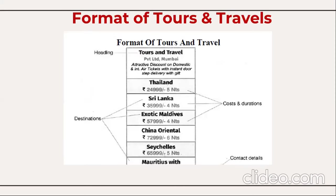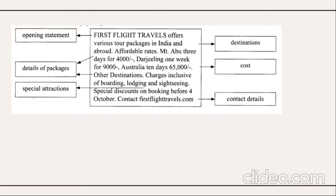Tours and travels advertisements are also budget-dependent — a high budget allows for a newspaper poster, while a low budget suits a simple classified format. Mention the heading, cost, duration, destinations, and contact details. For example: 'First Flight Travels offers various tour packages in India and abroad at affordable rates — Mount Abu 3 days for ₹4,000, Darjeeling 1 week for ₹9,000, Australia 10 days for ₹65,000. Charges include boarding, lodging, and sightseeing. Special discounts on booking before 4th October. Contact firstflighttravels.com.'